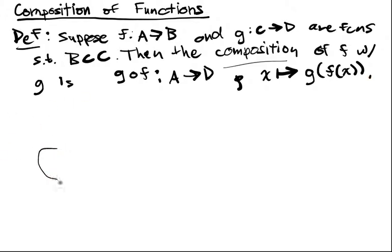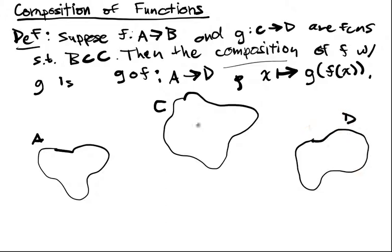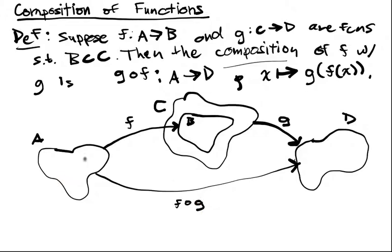The picture is: we've got A sitting over here, C over here, D over here, and B sitting inside C. So f goes from A to B and g goes from C to D. When I compose these, I get g composed with f going from A to D, and I ignore this intermediate space essentially.